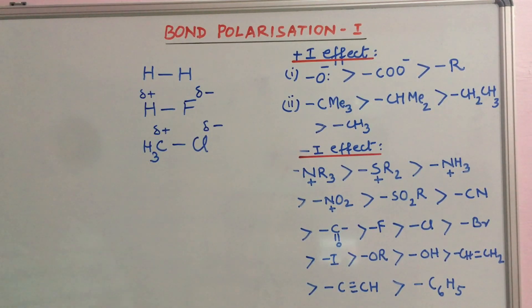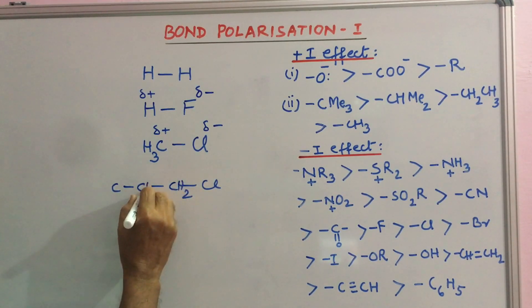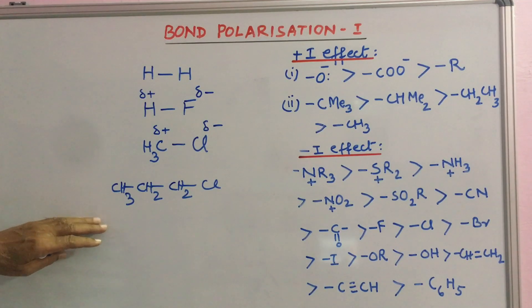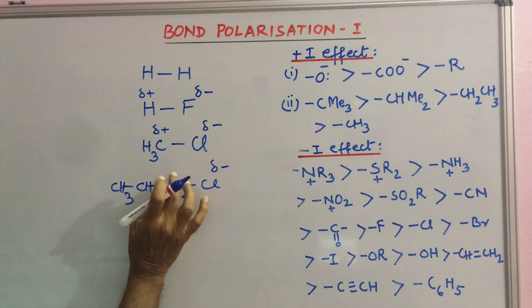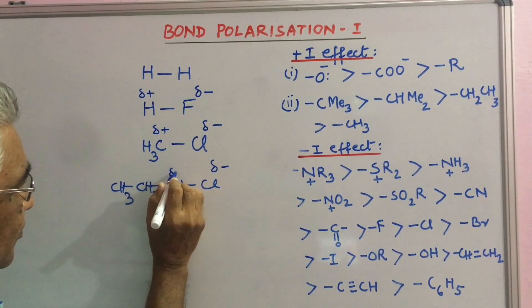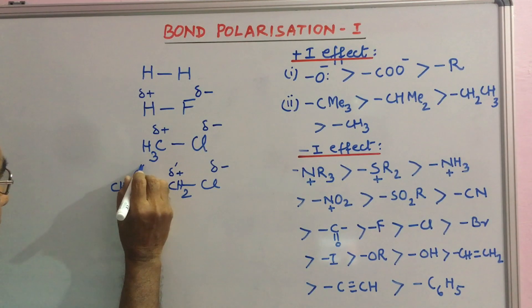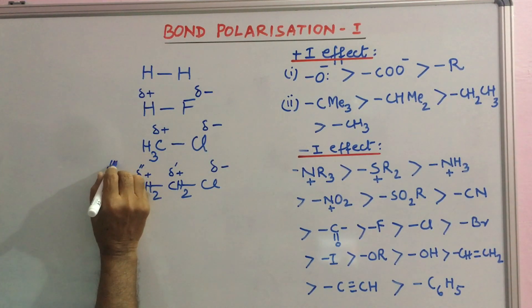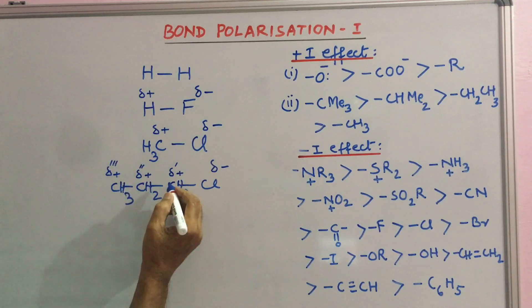Now, if this carbon chain is lengthened, say three carbons are put here, this delta minus charge is balanced by positive charge dissipated over the chain. That is, this delta plus is divided between the atoms: delta dash plus, delta double dash plus. Sum of these delta charges is equal to delta plus.